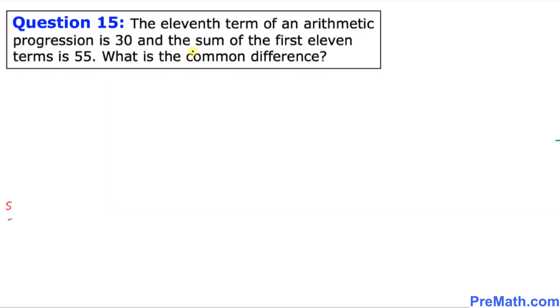And here is our question. It states the 11th term of an arithmetic progression is 30 and the sum of the first 11 terms is 55. Find the common difference.